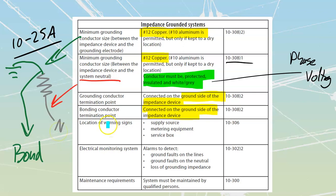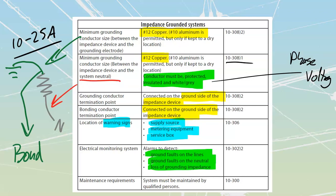We do have requirements for warning signs stating that it's an impedance grounded system. We need to have them at the supply source, metering equipment, and the service box. We also need to have an electrical monitoring system online at all times — it's going to alarm if there's a ground fault on any line, a ground fault on the neutral, or a loss of grounding impedance. If we lose that impedance device, or a ground fault occurs on the neutral side allowing current to bypass the resistance, we need an alarm for that too. We also need a maintenance system — it has to be maintained by a qualified person, with inspection and adjustments on a regular ongoing basis.